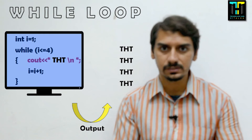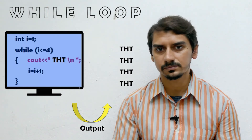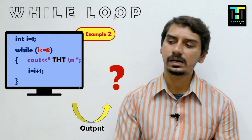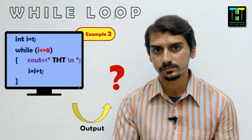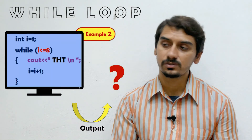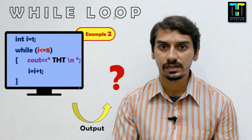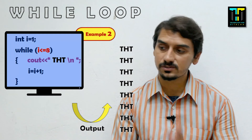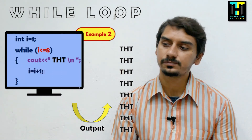Now let's look at different examples. If we change the condition from i <= 4 to i <= 8, the condition will be true eight times, and 'tst' will be displayed eight times. So the output of this code would be 'tst' printed eight times.